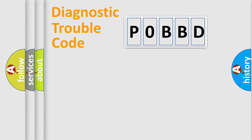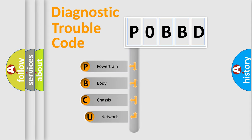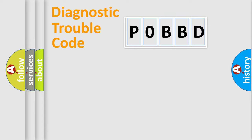First, let's look at the history of diagnostic fault code composition according to the OBD2 protocol, which is unified for all automakers since 2000. We divide the electric system of an automobile into four basic units: Powertrain, Body, Chassis, and Network. This distribution is defined in the first character of the code.